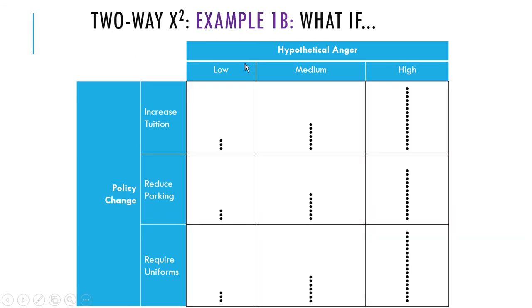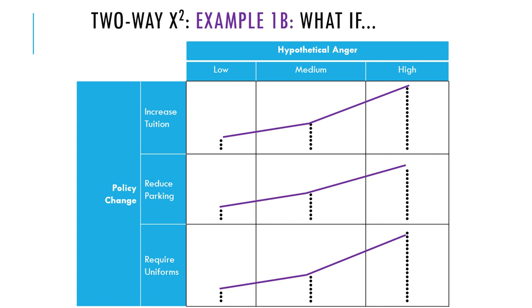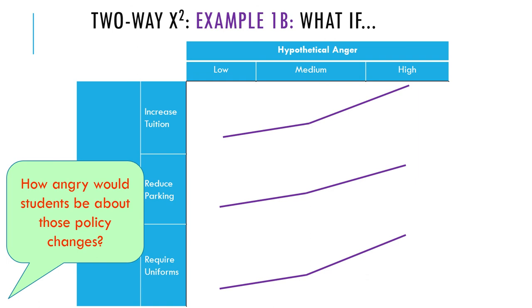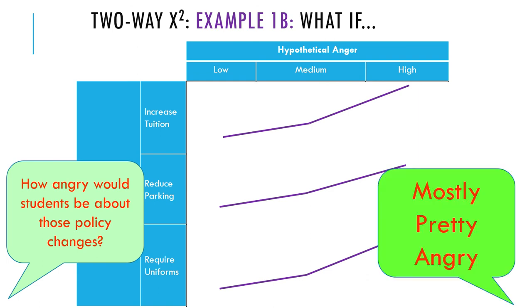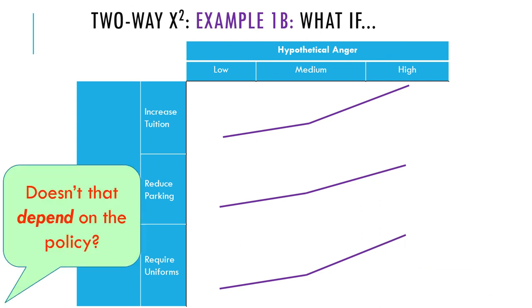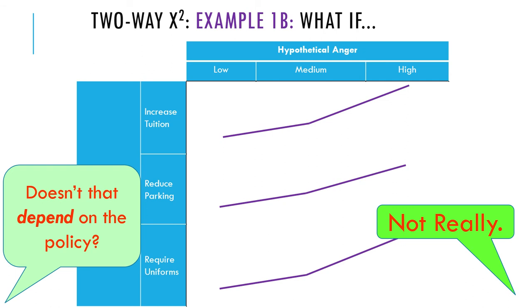Now let's consider another situation. Imagine the data looked like this instead: for all three policy changes, you have the same pattern — not very many people with low anger, a medium number with medium anger, and a lot of people with high anger. Those lines across the tops are parallel. So there is no association between those variables — every policy change has the same pattern of frequencies. If someone asked how angry students would be about those policy changes, you'd just say mostly pretty angry, and it doesn't depend on the policy. There's no dependence, no association.